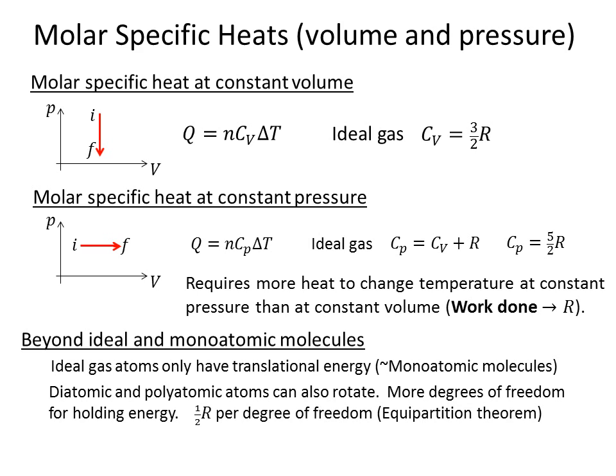Diatomic or polyatomic atoms can also rotate. So there are more degrees of freedom that can hold energy, and it turns out that you get a half of a R per degree of freedom. This is known as the equipartition theorem.